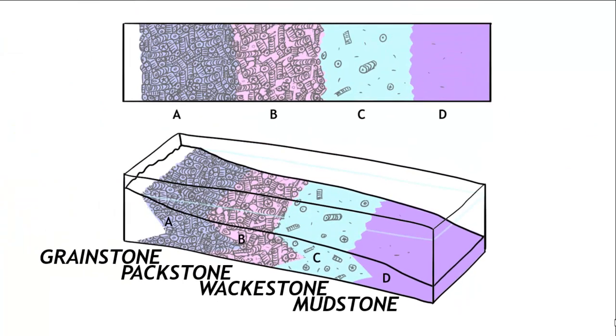The overall trend here is more biological skeletal material towards the left. In other words, the shallow setting where lots of organisms like to live and where it's wave washed, so finer sediments like mud are stripped away.